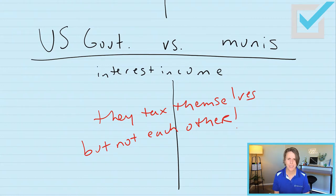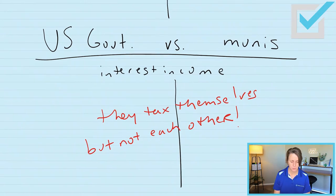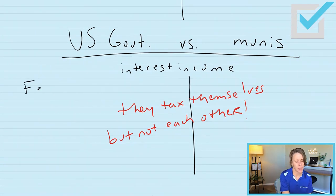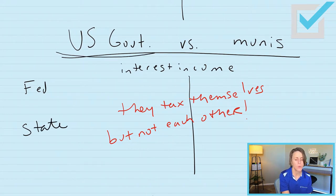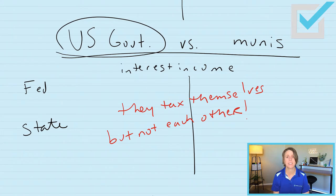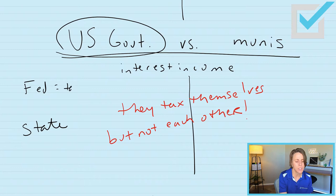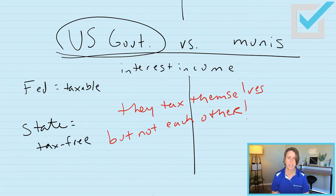So what does that mean? When you do your taxes on April 15th, you have taxes owed at the federal level and taxes owed at the state level. When you purchase a U.S. government security — U.S. government debt — they tax themselves. The interest is taxable on your federal income tax return, but it is tax-free at the state level.